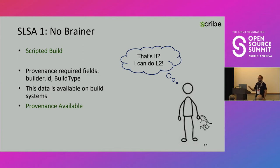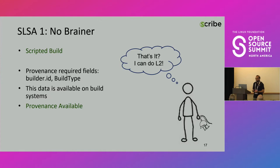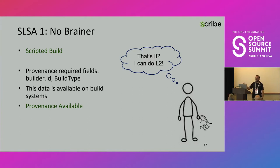Looking into the SALSA standard and the exact requirements of the provenance document, the required fields boil down to two: the builder ID and the build type. This information is available from the build systems themselves — so the provenance is available. We know it's Jenkins, and we can also know the pipeline run like the job run or its equivalent in GitHub workflows. So the provenance is available, and if it's so easy, I can jump right into SALSA level 2.